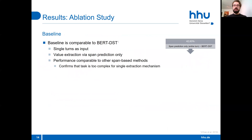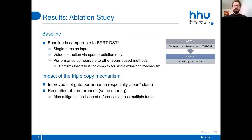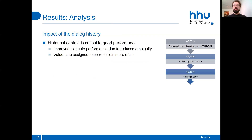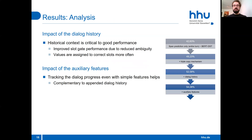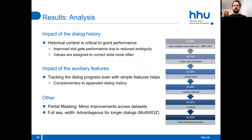We conducted an ablation study to find out how the individual components contribute to the performance of Trippi. Our baseline model is best compared to BERT-DST, which only takes single turns as input and only uses span prediction. The low performance shows that the dialogues in Multi-WOZ are too complex for a single copy method. Applying the triple copy mechanism improved performance greatly, especially the slot gate performance. This modification also enables resolution of coreferences, even across multiple turns. We found that historical context is important to reduce ambiguity so values are assigned to the correct slots more often. Adding the auxiliary features proved complementary to the dialogue history. Partial masking resulted in minor but consistent improvements, and using the full input width is obviously advantageous for longer dialogues like those in Multi-WOZ.